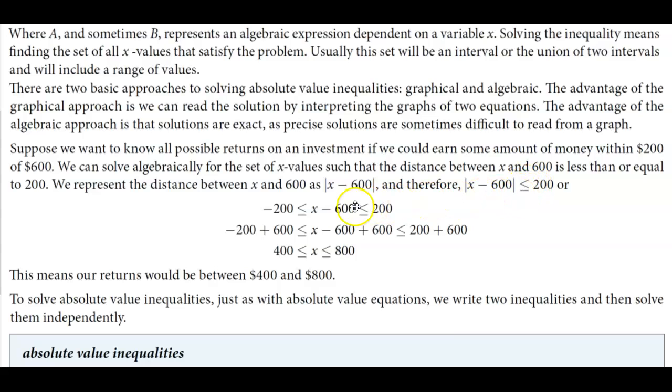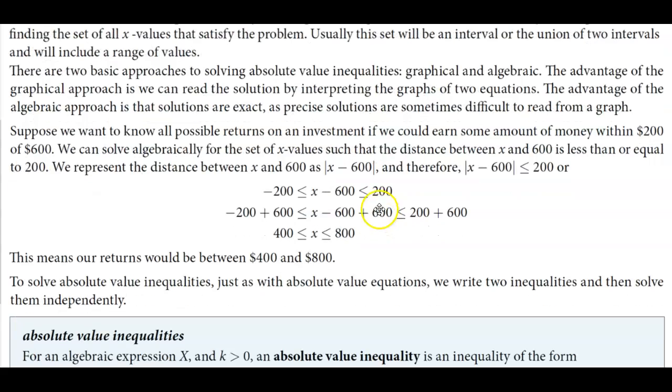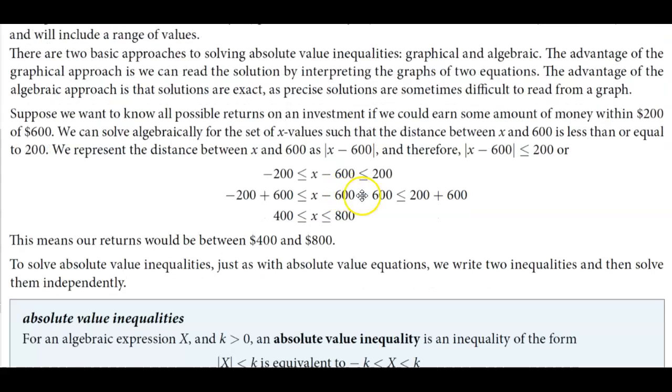Or we can say that x - 600 is between -200 and 200, and then we would solve this compound inequality.